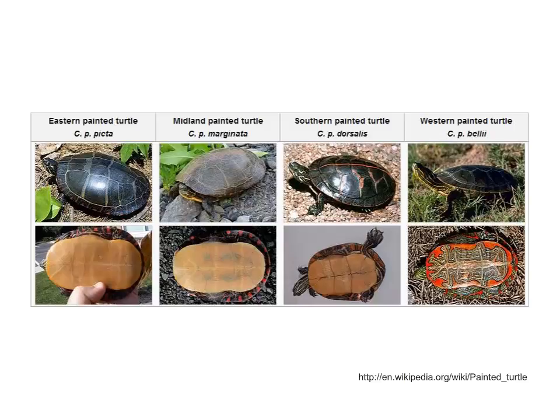Looking specifically at the plastron: the western painted turtle has a very intricate patterning. The midland painted turtle has almost no patterning on the plastron, but does have some colouration towards the back end. The eastern painted turtle has no colouration whatsoever on the plastron. So all these painted turtles are differentiated based solely on some identification characteristics of the plastron.